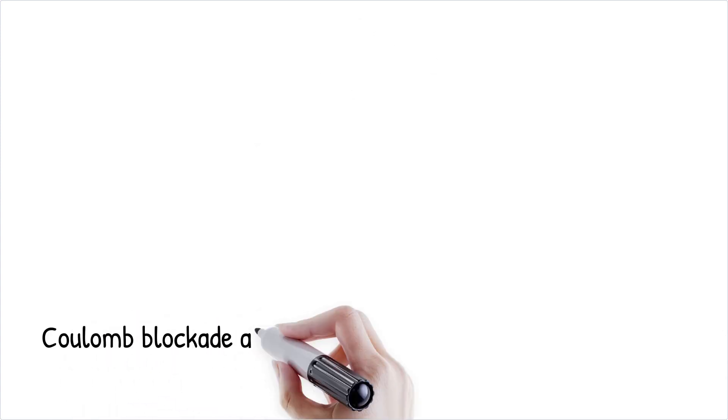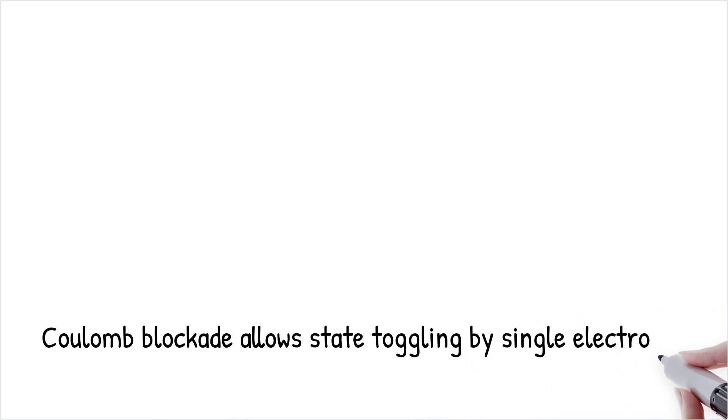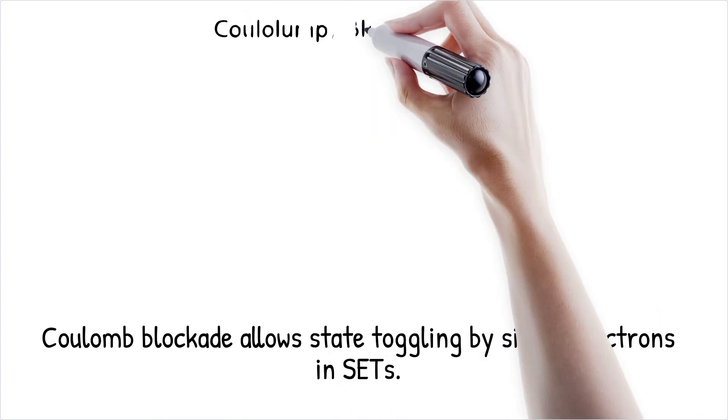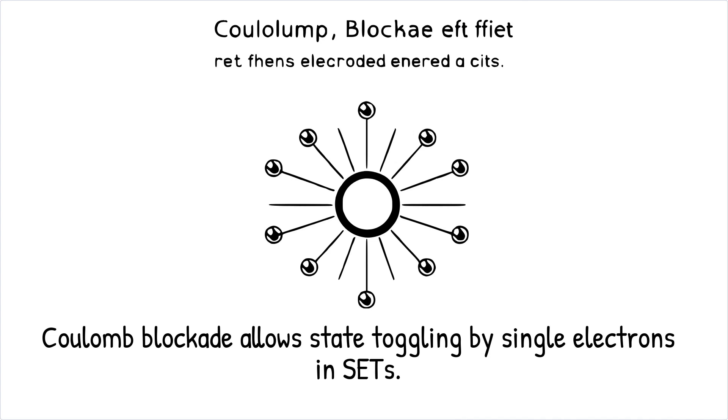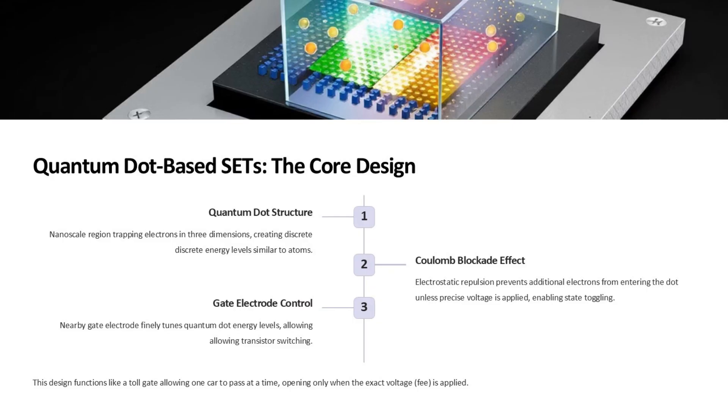Coulomb blockade: SETs rely on the Coulomb blockade effect, where electrostatic repulsion prevents additional electrons from entering the dot unless a precise voltage is applied. This allows SETs to toggle states by adding or removing a single electron.